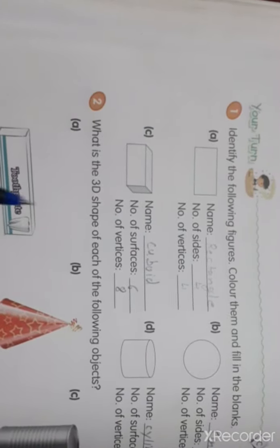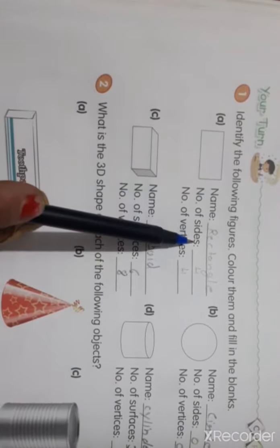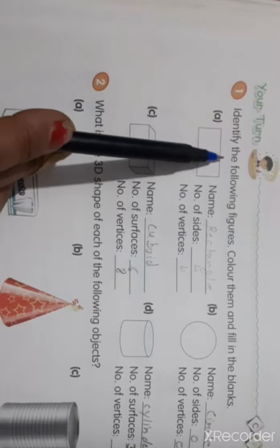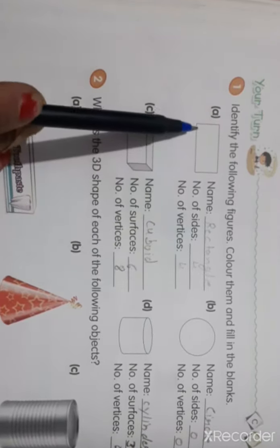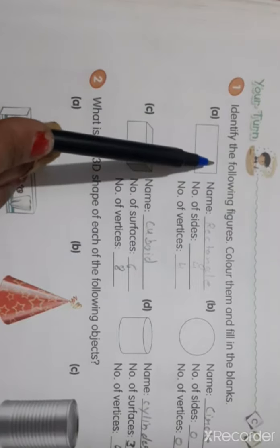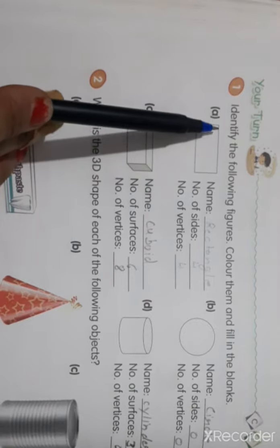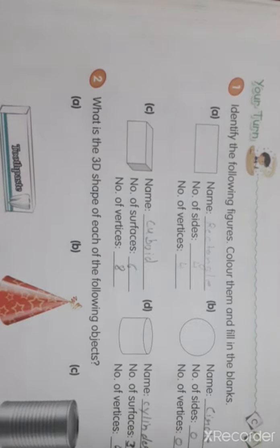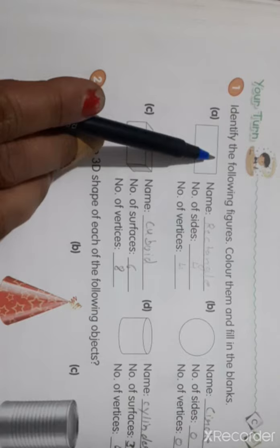So first figure is rectangle. Number of side 4: 1, 2, 3, 4. Number of vertices 4: 1, 2, 3, 4. It is the side, why? Because it joins 2 points. When one side joins 2 points, then what do we call it? Side or edges.